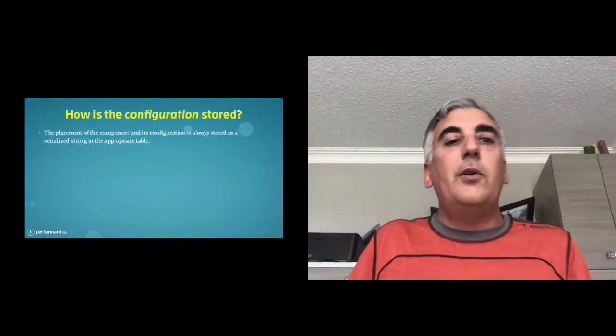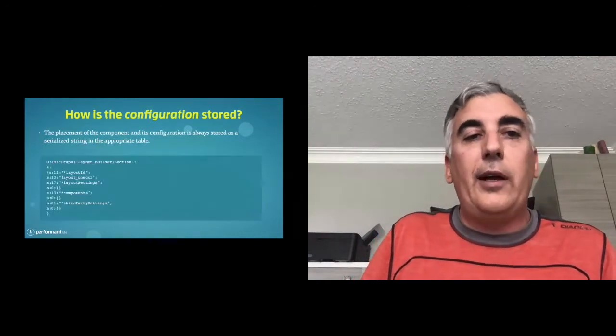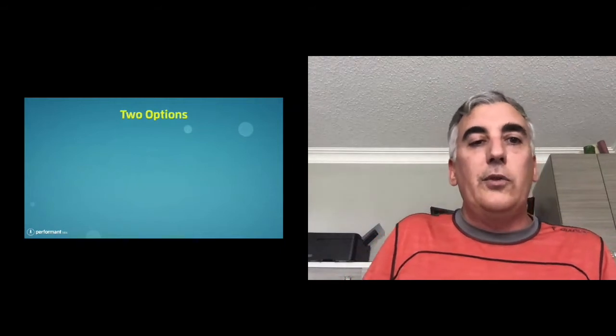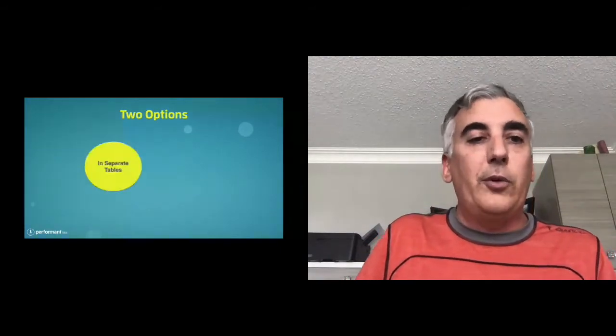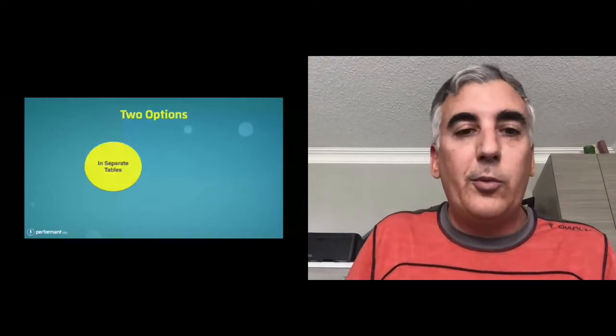Components are divided into three parts: the front end (rendered HTML), the configuration (such as location on the page), and the content itself. The placement and configuration is always stored as a serialized string in the appropriate table. For now we're just talking about blocks. Content storage has basically two options: separate tables or stored in the page.